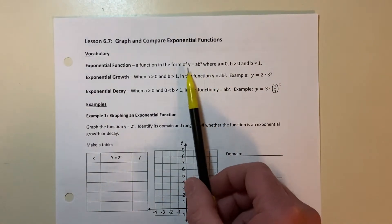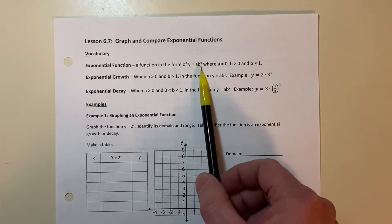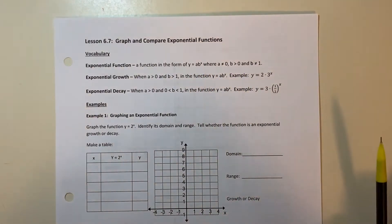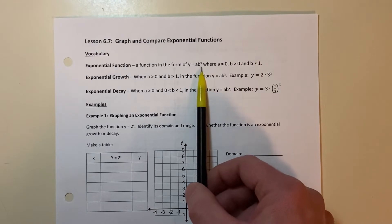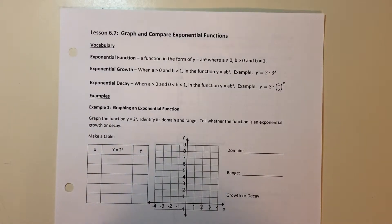You're going to have an a value — it can't be zero because that would wipe everything out. B is going to need to be greater than zero, because if it was negative it would mess things up greatly. Also, b can't be one because if it's one, it's never going to grow. The cool thing about exponential functions is it's repeated multiplication.